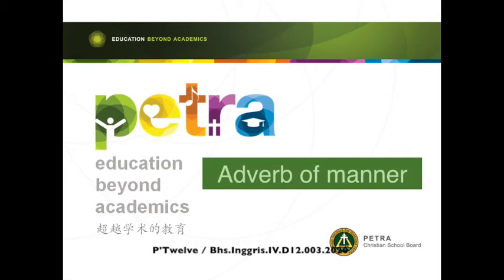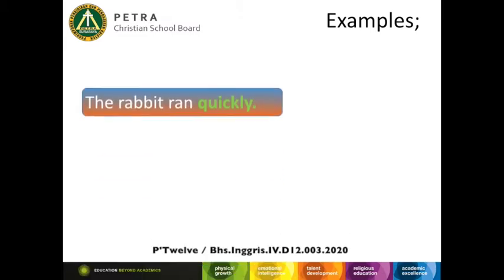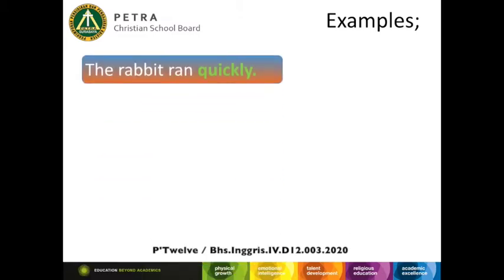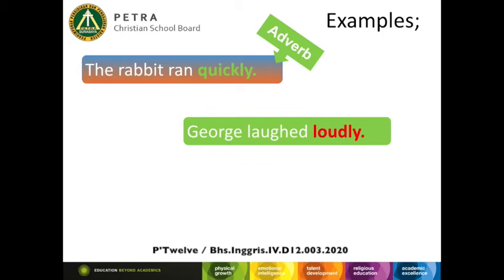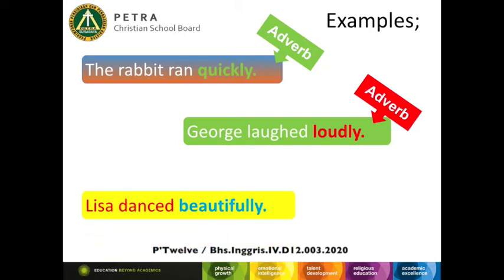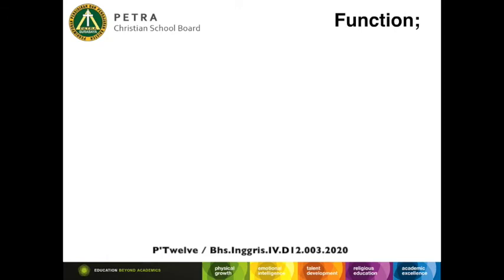Great, we are going to learn about adverb of manner. Here are some examples: the rabbit runs quickly — 'quickly' is an adverb; George laughed loudly — 'loudly' is an adverb; Lisa danced beautifully — 'beautifully' is an adverb. From these examples, can you tell me why we need to put an adverb in a sentence? The function of an adverb is to tell us how something is done.